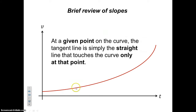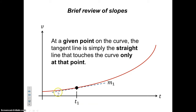So what is a tangent line? For some given point, the tangent line is simply the straight line that touches the curve only at that point. At some value T1, we trace up to the curve and mark the point. Then you draw a straight line that only touches the curve at that point — that straight line is the tangent. And that tangent's slope equals the slope of the curve at this particular point.